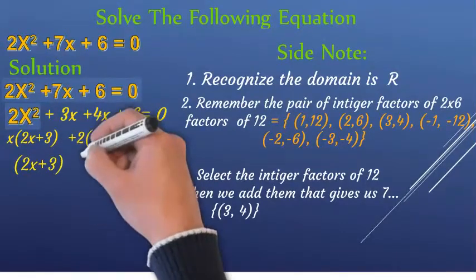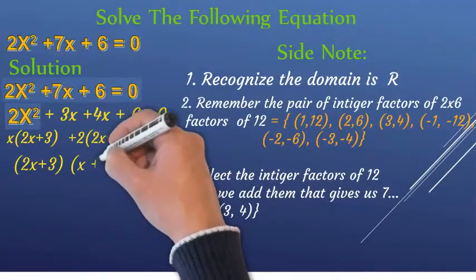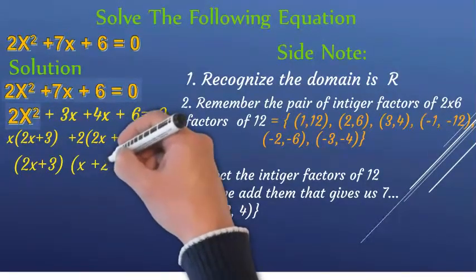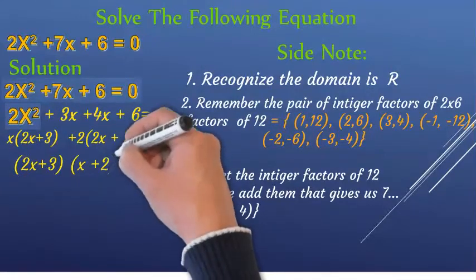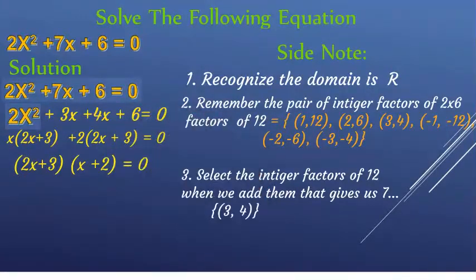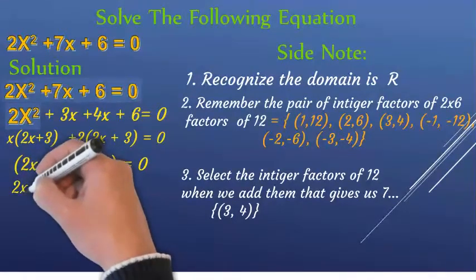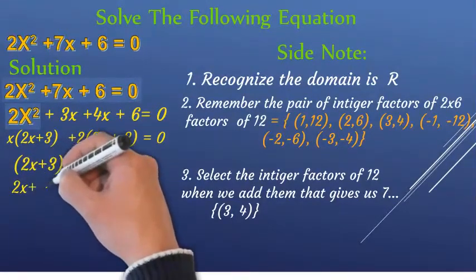The factored form is 2x plus 3 times x plus 2, and that is equal to 0.